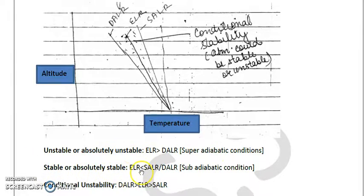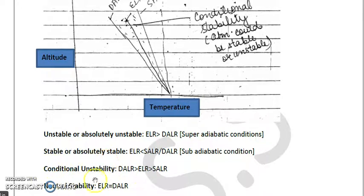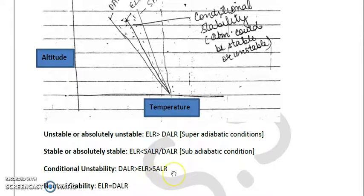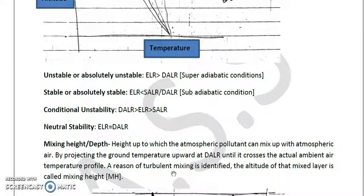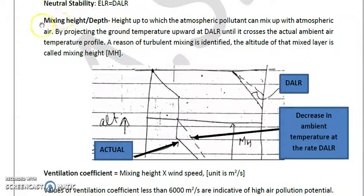There is another condition called neutral stability, where ELR equals DALR — the atmosphere is then neutral. A very special case is conditional stability, where DALR is greater than ELR, which is in turn greater than SALR. This condition is known as conditional stability: DALR > ELR > SALR. This covers the main concepts of atmospheric stability.